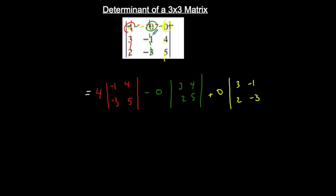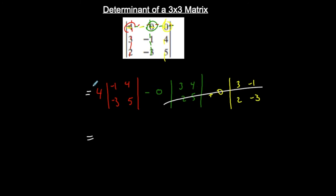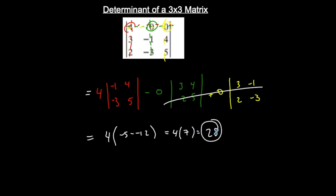The full expansion is: plus the first element times its cofactor determinant, minus the second element times its leftover determinant [3, 2; -1, -3], plus the third element times its corresponding leftover matrix. Since zero times anything is zero, those terms drop out. We get 4 times the determinant of the 2×2, which is (-5) minus (-12) = 7. So 4 × 7 = 28, and 28 is the determinant.